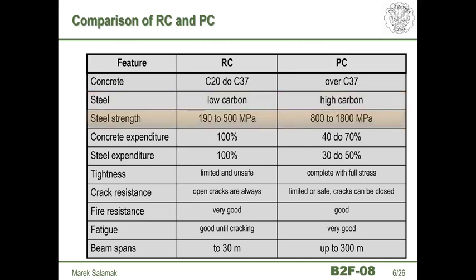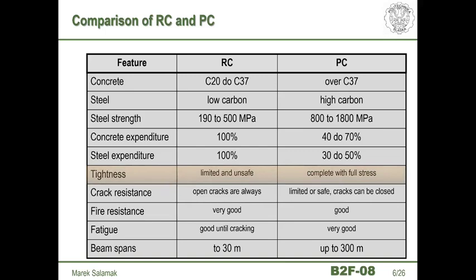Pre-stressing steel has a much higher strength, from 800 to 1800 MPa, compared to a maximum of 500 MPa for reinforcing bars. As a reference, pre-stressing can reduce the consumption of concrete by 40% to 70% compared to a reinforced concrete structure, and the use of reinforcing steel by 30 to 50%. It should be remembered that pre-stressing steel is almost three times more expensive than reinforcing steel, and it is not possible to design a pre-stressed structure without reinforcement.